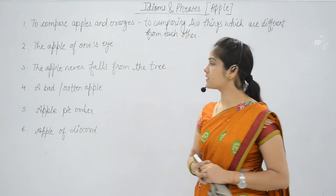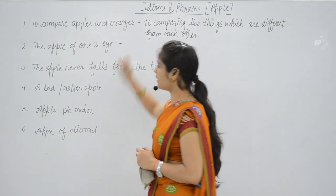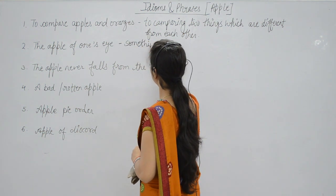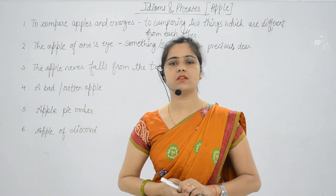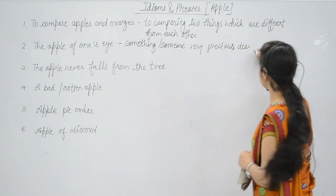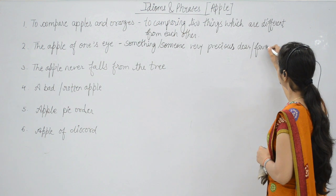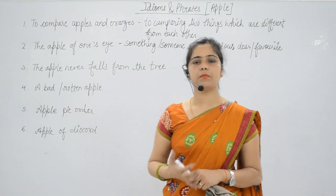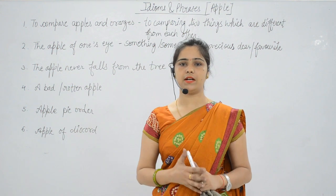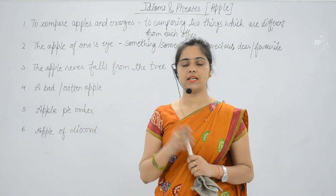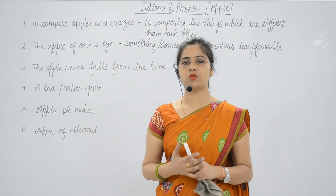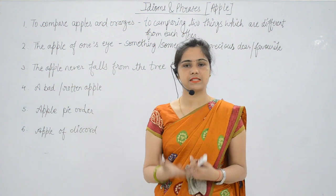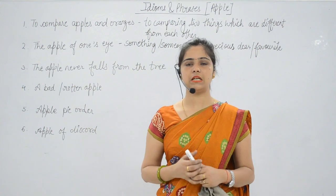Next is 'the apple of one's eye.' In Hindi we say 'aankon ka taara.' It means something or someone very precious, dear, or favorite to us. For example: she is fond of all her dogs, but little Bela was the apple of her eye. Or: all my students are my apple of one's eye — meaning they are as precious to me as my own eyes.